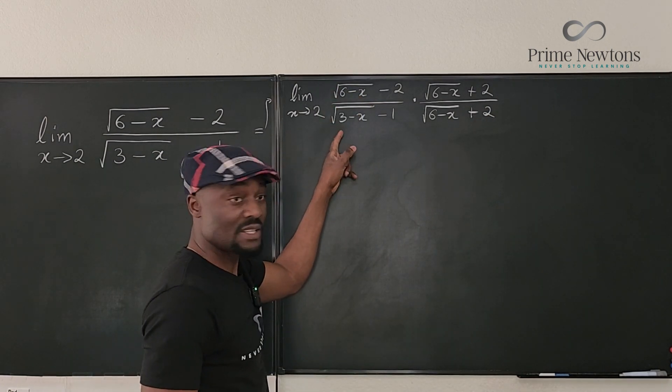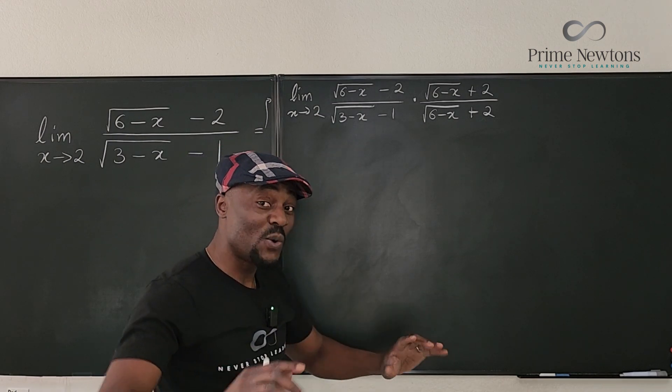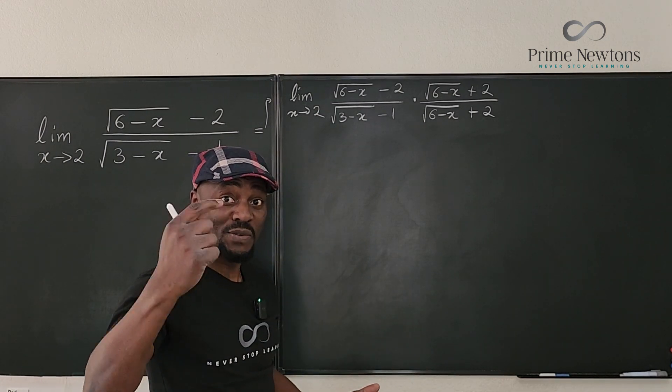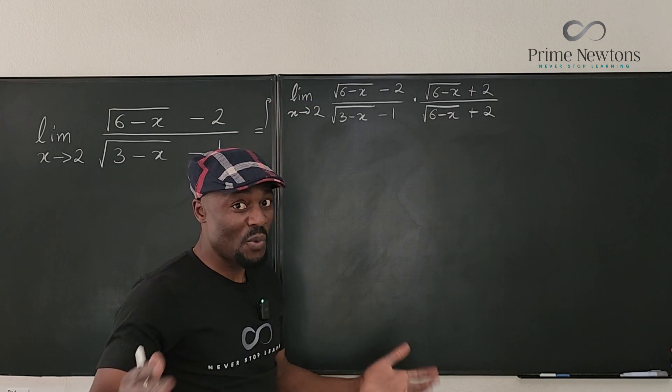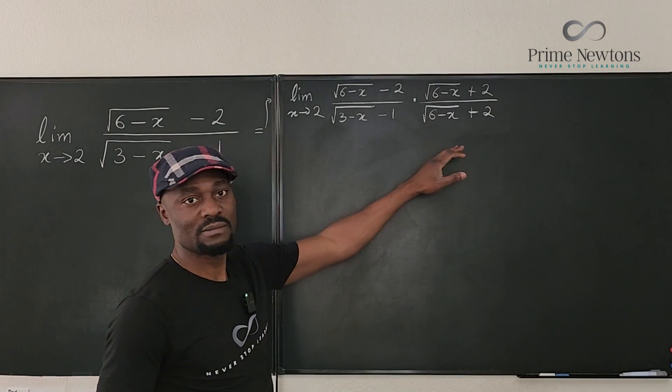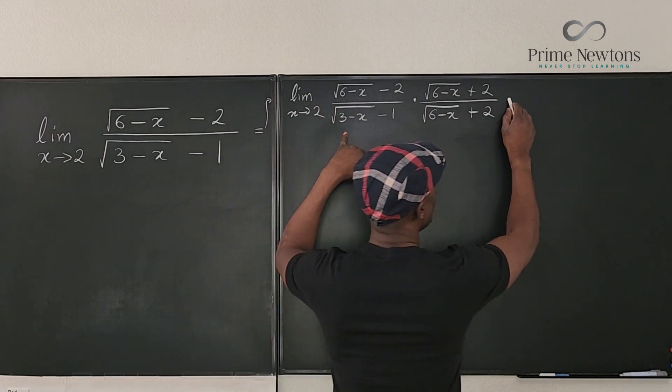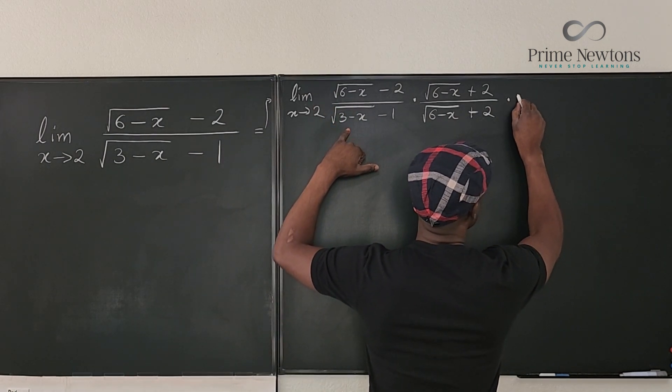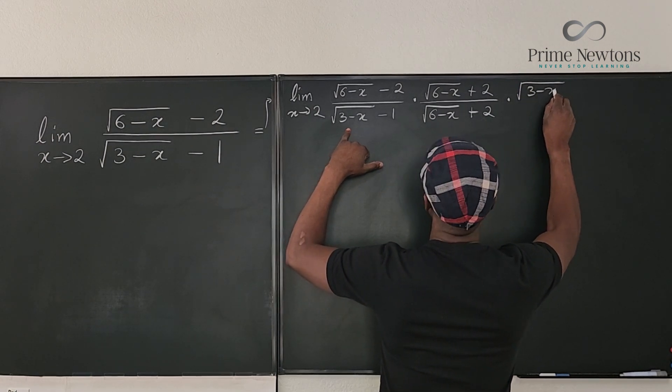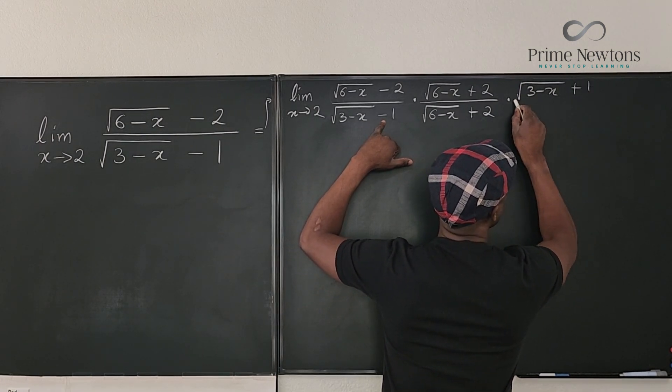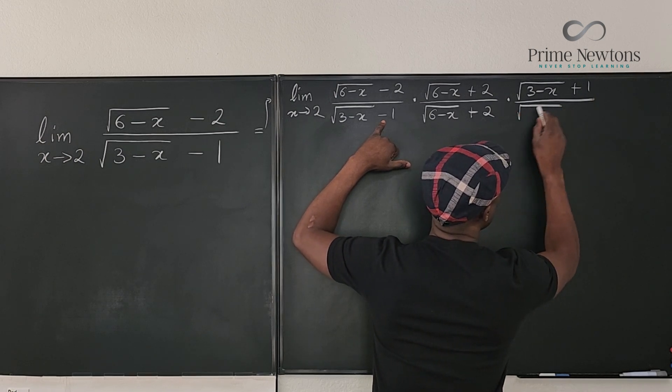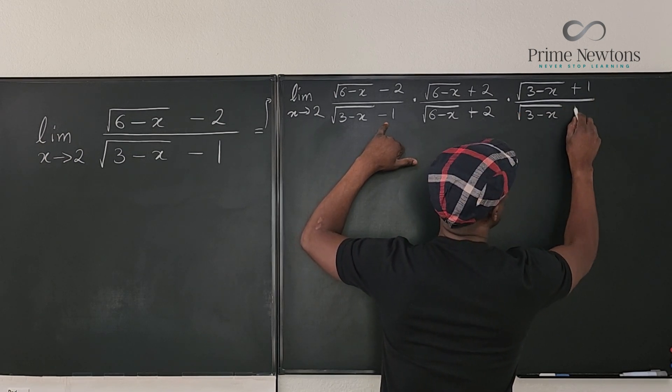Simultaneously rationalize the bottom. Remember, the only reason you're doing this is because we've got a 0 over 0 situation. Otherwise, you don't need to do that. Now, and both of them are radicals. So here, we're going to rationalize the bottom too. It's going to be the square root of 3 minus x plus 1 divided by the square root of 3 minus x plus 1. So everything now can be taken care of.